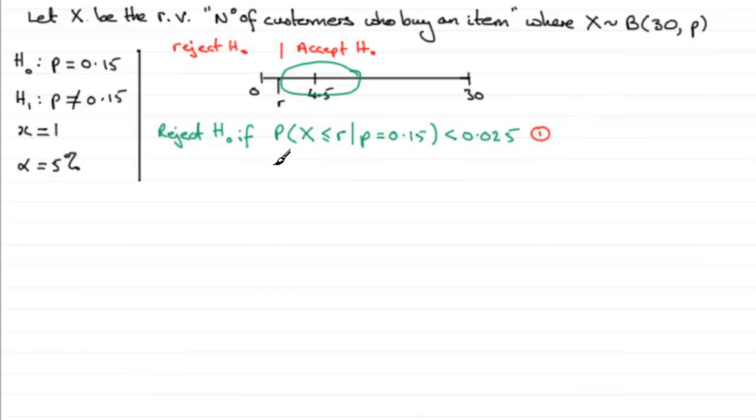The other way of doing this is to work out the probability of getting a value less than or equal to one. We would reject H₀ if the probability that X is less than or equal to that observed value of one, given that p equals 0.15 - that H₀ is true - turns out to be less than 0.025. That's our second method, and you can choose whichever one of these you want to.